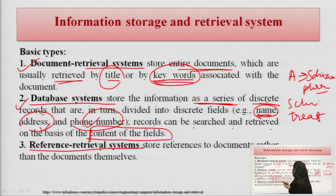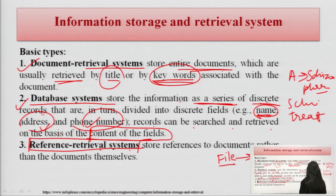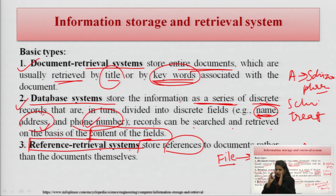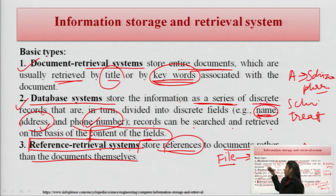The third type is the reference retrieval system. The query could be about any drug, disease, treatment strategy, management, adverse drug reaction, or any aspect of a drug. Reference retrieval systems store references to documents rather than the documents themselves — when a reference is input, it opens the corresponding document. This is the key difference between the three types of storage and retrieval systems.